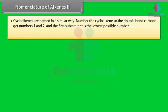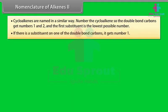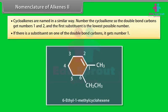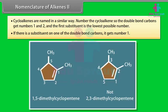Step 9: Cycloalkenes are named in a similar way. Number the cycloalkene so that the double bond carbons get numbers 1 and 2, and the first substituent gets the lowest possible number. If there is a substituent on one of the double bond carbons, it gets number 1. For example, 6-ethyl-1-methyl-cyclohexene. Note that this compound is named 1,5-dimethyl-cyclopentene and not 2,3-dimethyl-cyclopentene.